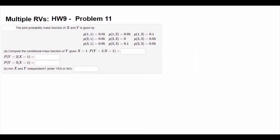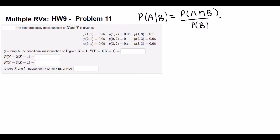Problem number 11. The joint probability mass function of x and y is given below. We are going to use the definition of conditional probability: P(A given B) equals their intersection divided by the given condition which is P(B). Part A is asking probability that y equals 1 given x equals 1. That is probability of (1,1) over probability that x equals 1. From the table, (1,1) has probability 0.55. Our denominator — probability that x equals 1 — is all values in the x=1 row, and 0.55 plus 0.15 gives 0.70. So the answer is 0.55 divided by 0.70.